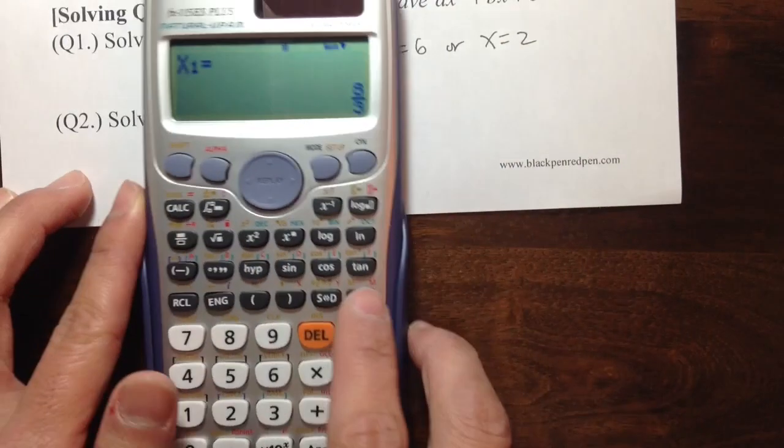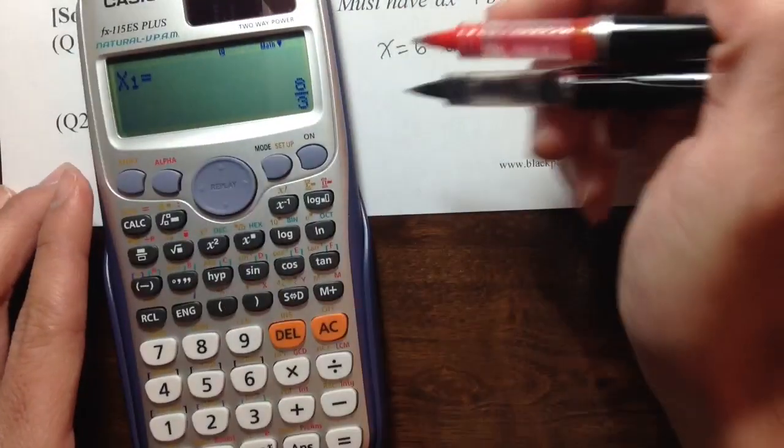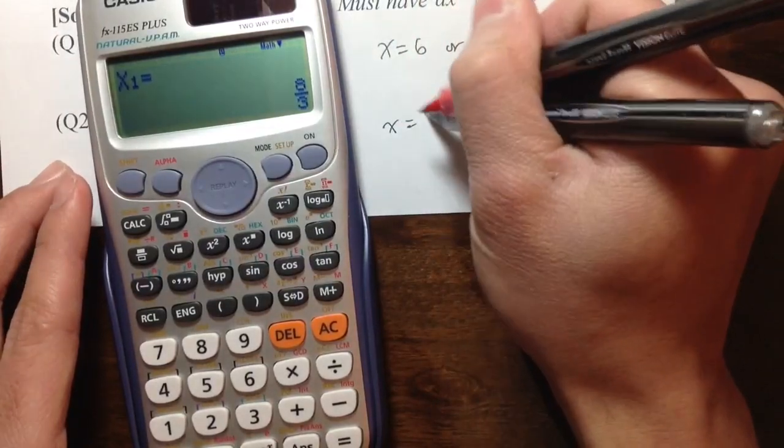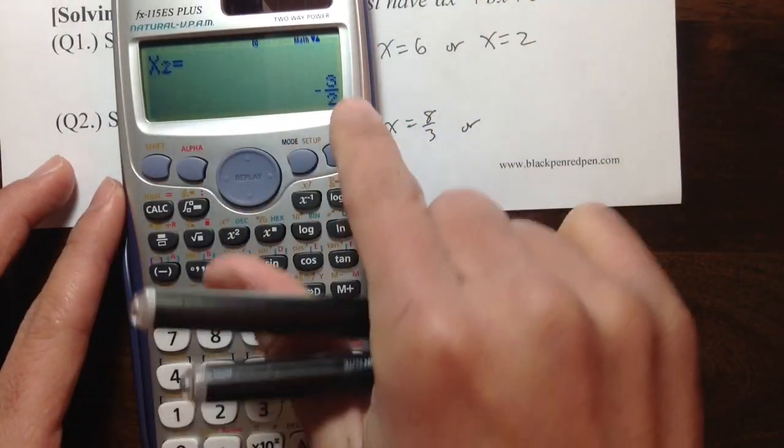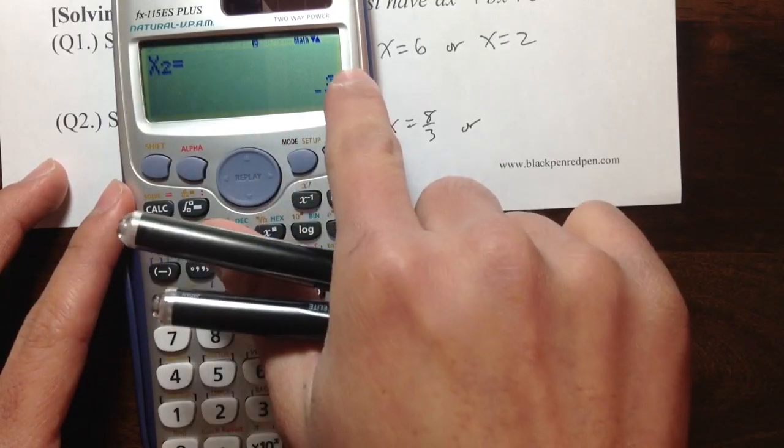Then we also get fractions. x₁ equals 8 over 3, so x can be 8/3. Or another one, the second answer: x can also be -3/2.